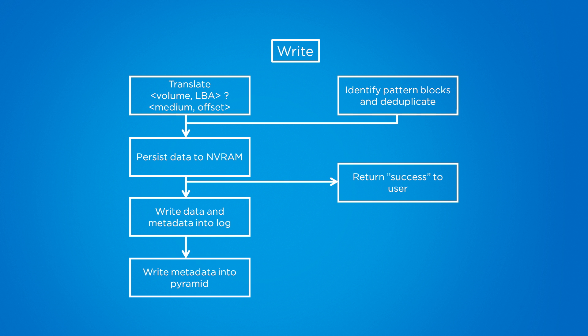Then the blocks are persisted to NVRAM and the write is acknowledged back to the user. This is a very wise decision that Pure has made. In a dual controller architecture where CPU and RAM resources are fixed and limited, making sure that IO is always handled and processed before data services is very smart. Having the ability to defer those data services is a trade-off and a feature that most customers would understand and appreciate. The fact that there should never be a Pure array in production running at such a high level that CPU resources wouldn't be available means this rarely if ever comes into play. From NVRAM, the blocks are written to SSD, the metadata logs are updated, and finally that metadata itself is written into the pyramid and the write process is complete.